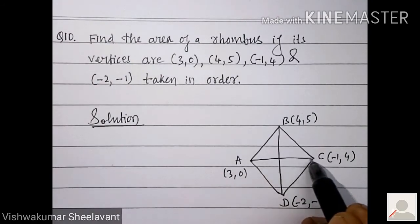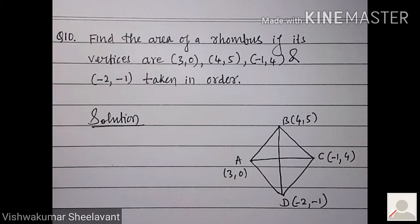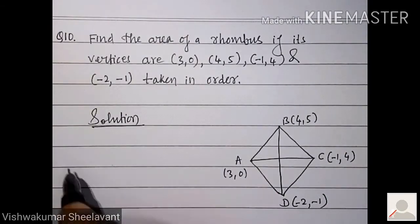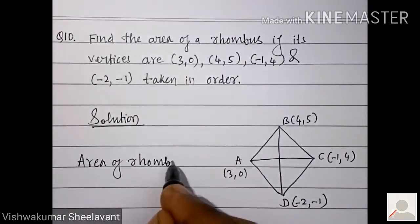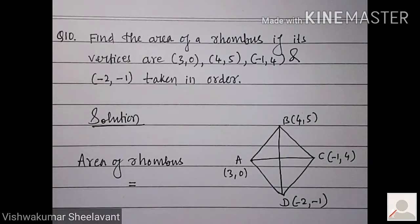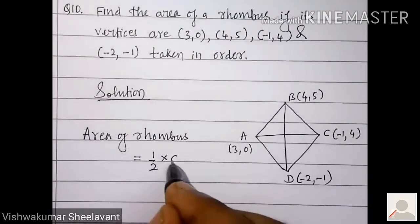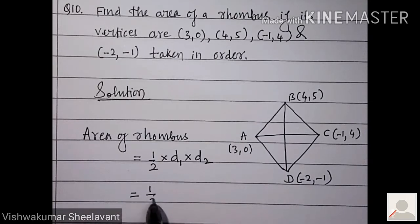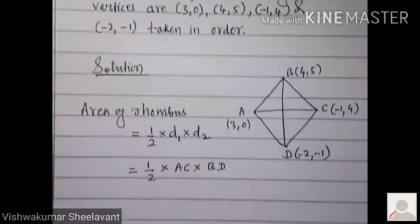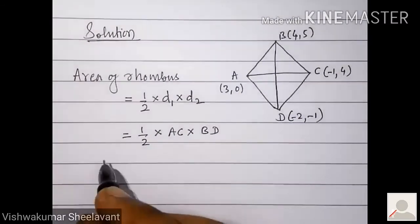So here, BD and AC are diagonals. And you have studied how to find the area of a rhombus. Area of rhombus is equal to half into diagonal 1 into diagonal 2. Therefore, in this case, area of rhombus is half into AC into BD. Call this equation 1.